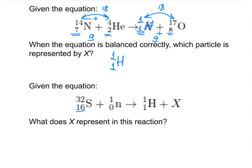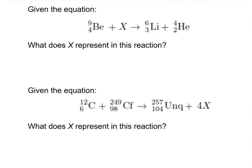Using the same logic: atomic numbers on the left sum to 16, so X has atomic number 15 — that is phosphorus. Mass numbers on the left sum to 33, so X has mass number 32, giving us phosphorus-32. For the beryllium-to-lithium-6 artificial transmutation reaction: atomic numbers sum to 5 on each side and mass numbers sum to 10, so the unknown particle has mass number 1 and atomic number 1 — a proton.